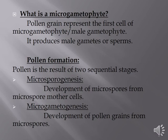We will start by clearing our concept related to micro gametophyte. Previously we studied that microspores are formed as a result of the division of microspore mother cells, and those microspores mature to form pollen grains. These pollen grains represent the first cell line of micro gametophyte or male gametophyte. These micro gametophytes then produce male gametes or sperms.